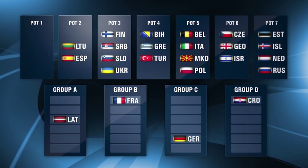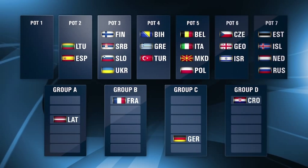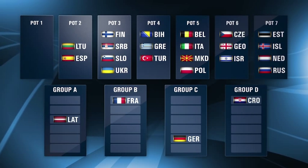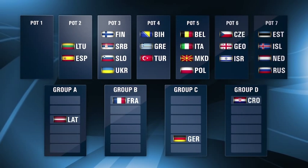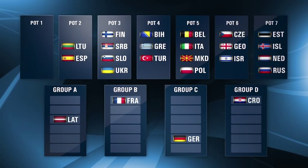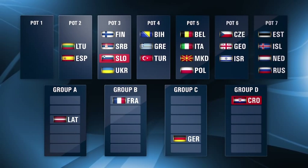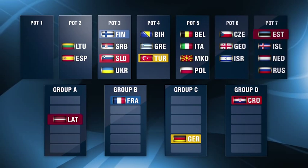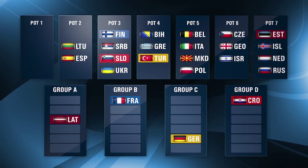As part of the EuroBasket 2015 organisation, each of the four hosts have selected partner countries which will automatically be drawn in their group. Croatia has Slovenia as their partner, France has Finland, Germany has Turkey and Latvia has Estonia, and they'll be placed in the respective groups when their pots are drawn.